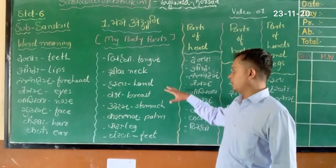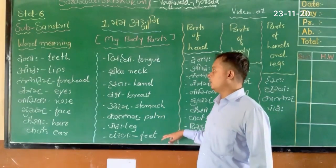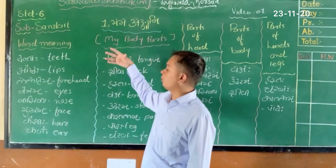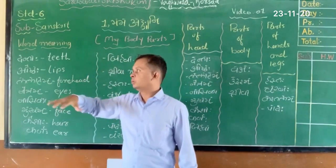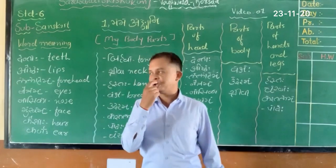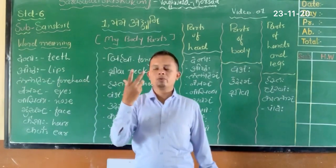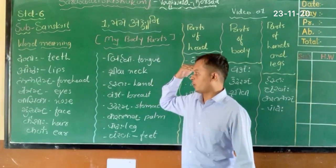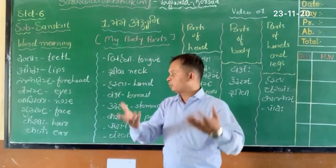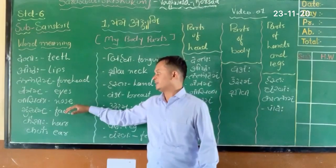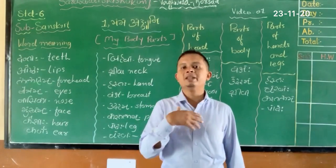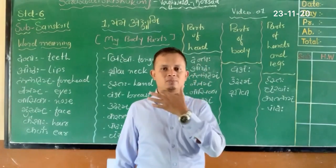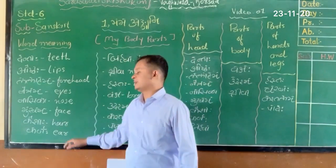So these body part names and their meanings can be addressed properly. You know the function of our body. Lalatah is our forehead, Netram means eyes — what you use to see. Nasika is our breathing part. Mukha means our face.